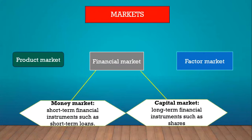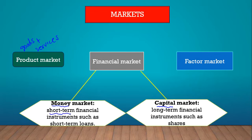The first market is the product market — the market for goods and services where goods and services are traded. The second type is the financial market, which is divided into the money market and the capital market. The money market is for short-term financial instruments such as short-term loans, while the capital market is for long-term financial instruments such as shares.